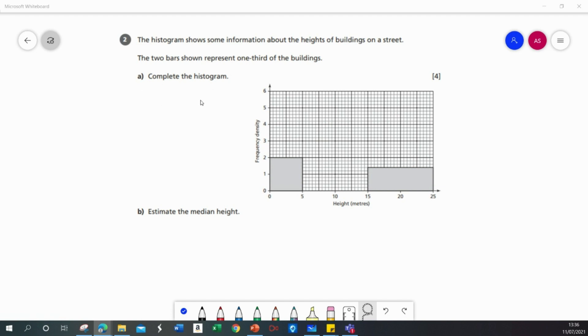So the missing bar will represent two-thirds of the buildings and I need to therefore work out the frequency of the first bar and the frequency of the third bar.